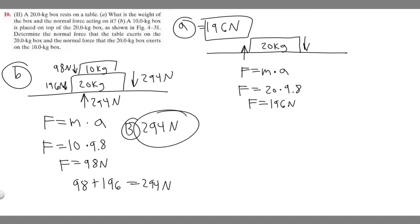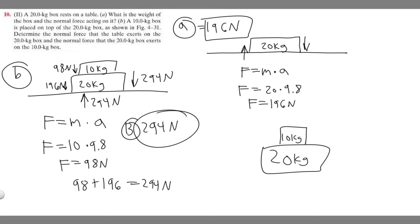Now for the second part — finding the normal force the 20 kg box exerts on the 10 kg box. Think of it as a new scenario where the 20 kg box acts like a table, with the 10 kg box sitting on top of it. We want to find the upward normal force this surface exerts on the 10 kg box.